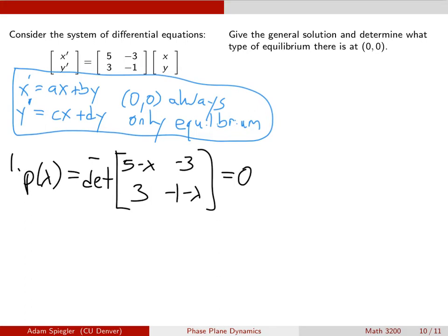Skipping some of those details, that characteristic equation when you simplify that would look like lambda squared minus 4 lambda plus 4, which in other words is lambda minus 2 squared.